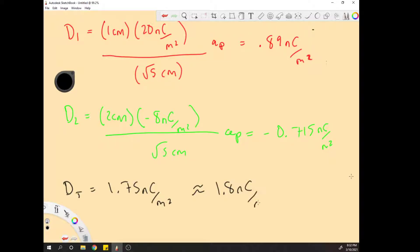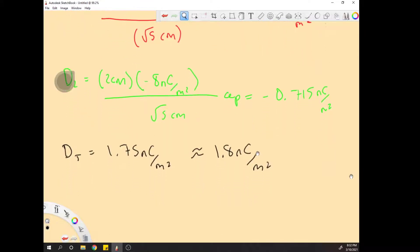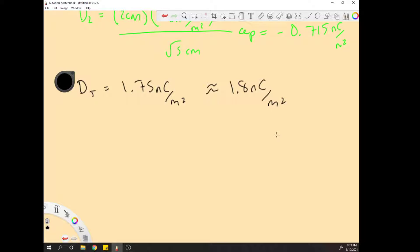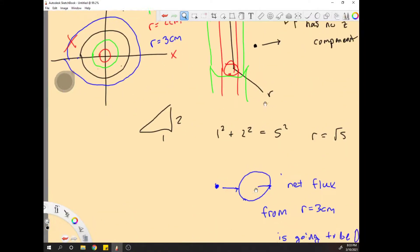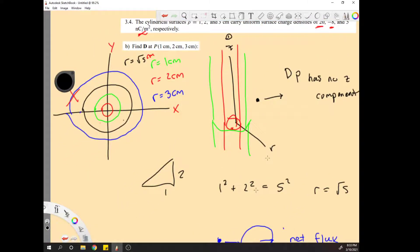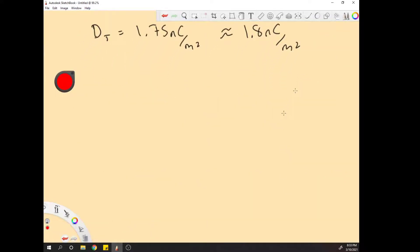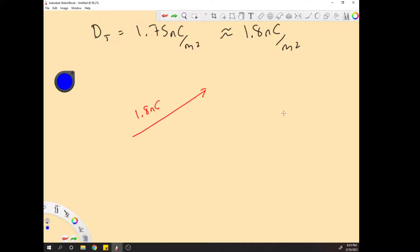Looks like 1.75 nanocoulombs per meter squared, roughly 1.8. So the last thing we need to do is find the actual direction. So this is one centimeter, two centimeters, so it's like right about here. We found that we have a direction of 1.8, we need to find the actual components. Right now we have a vector that looks like this, it's 1.8 nanocoulombs.